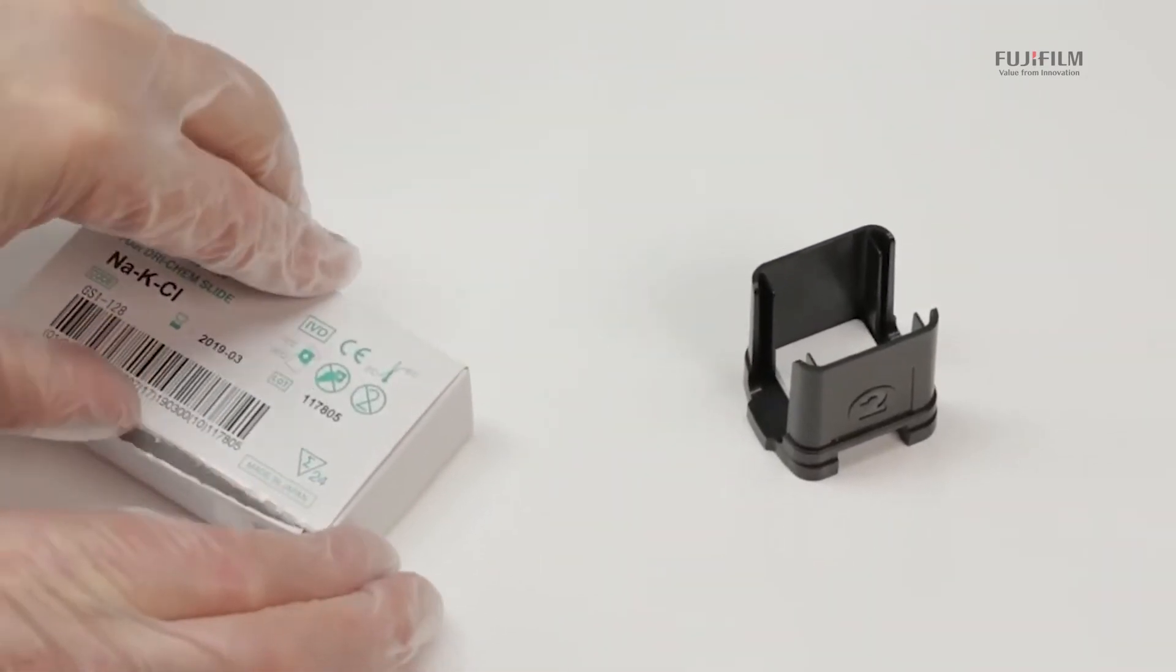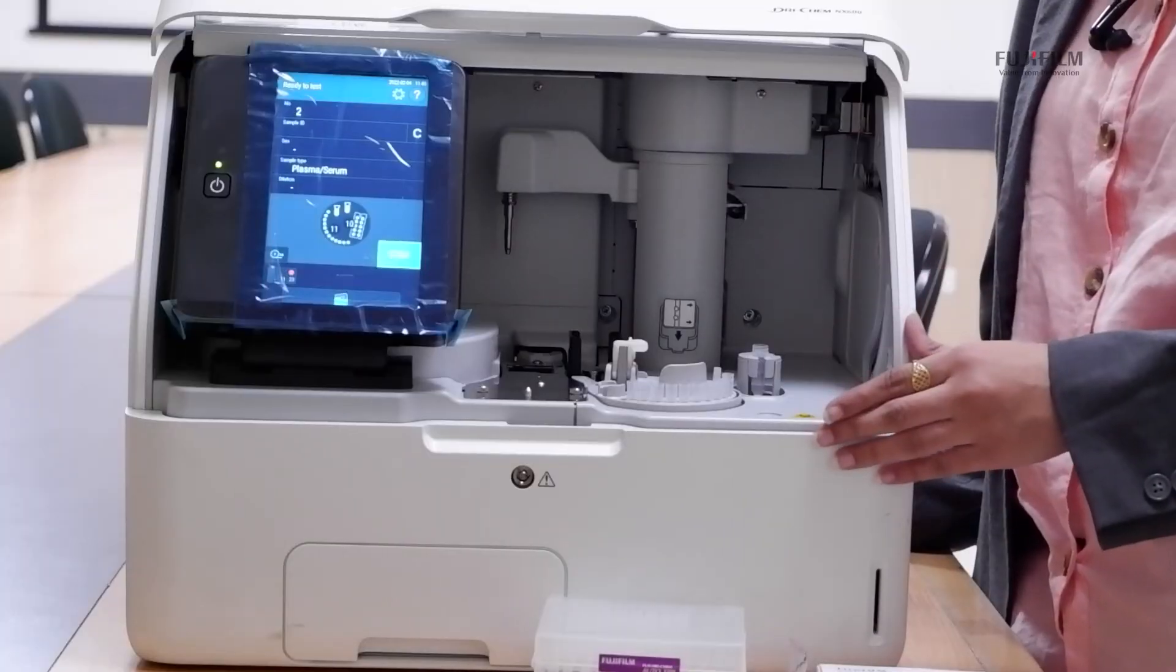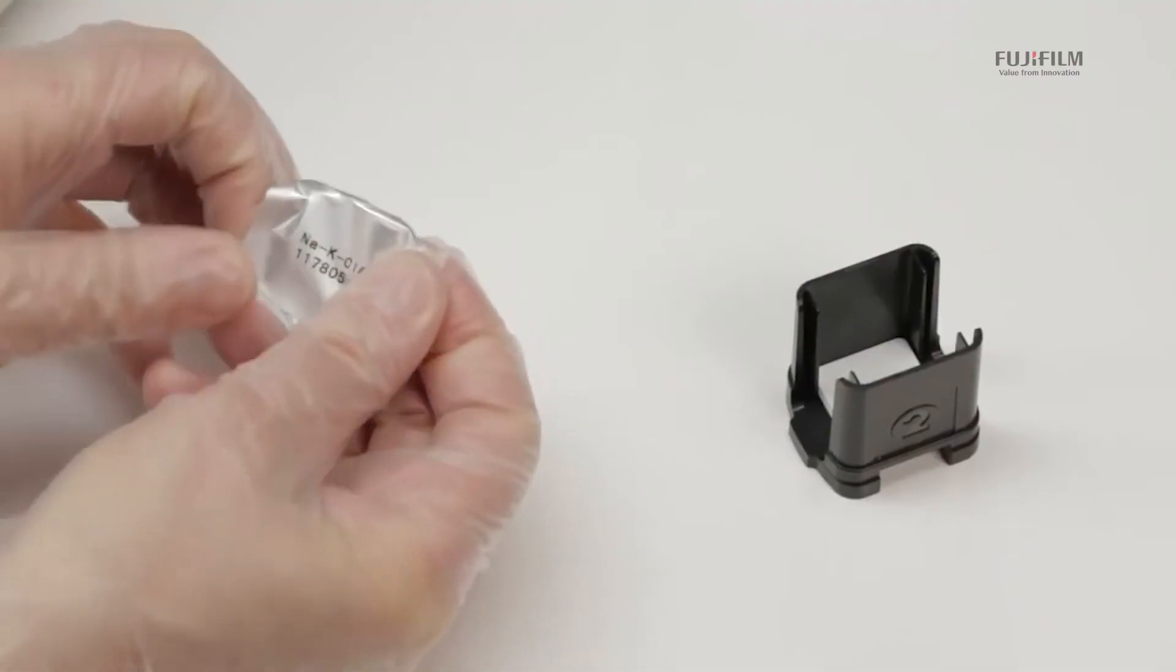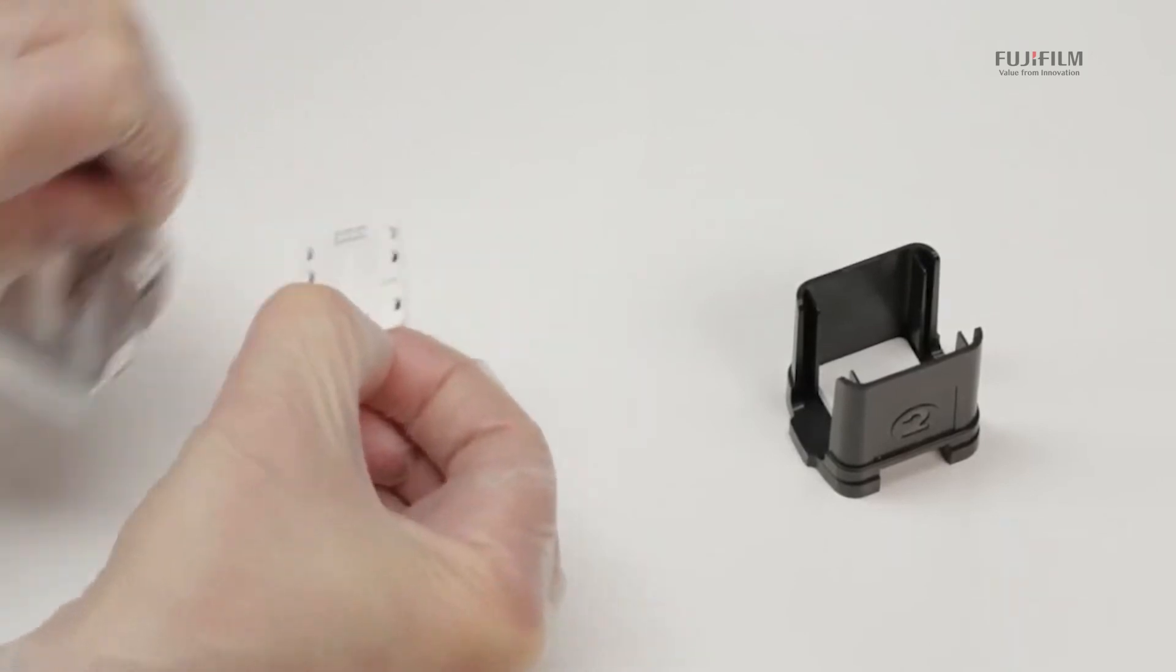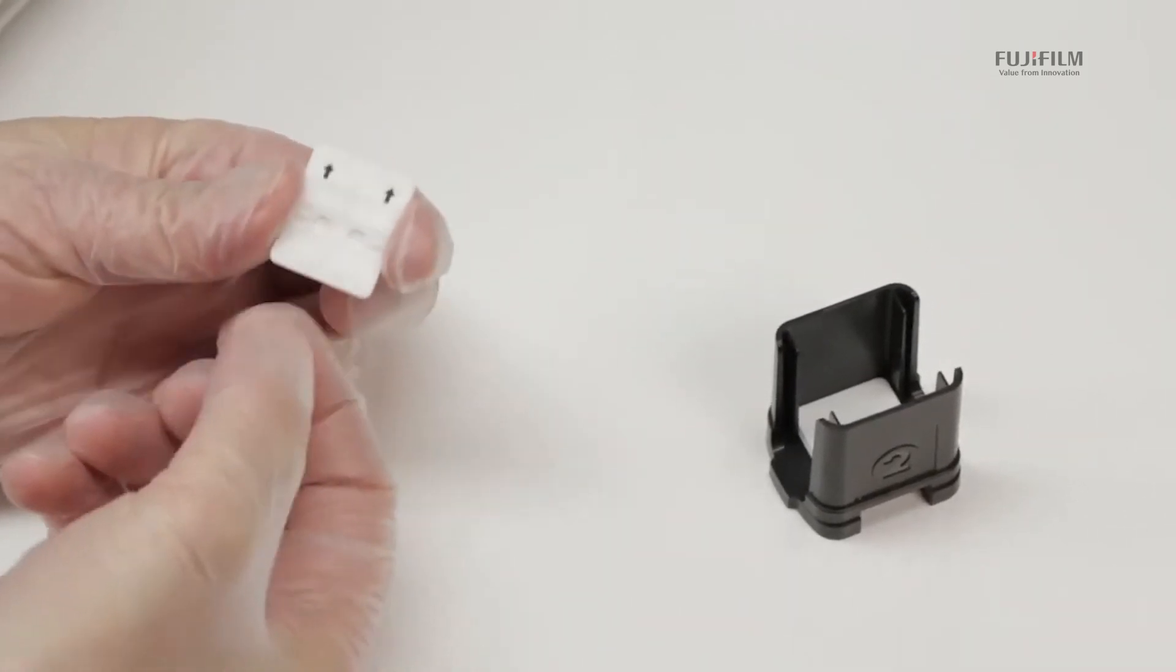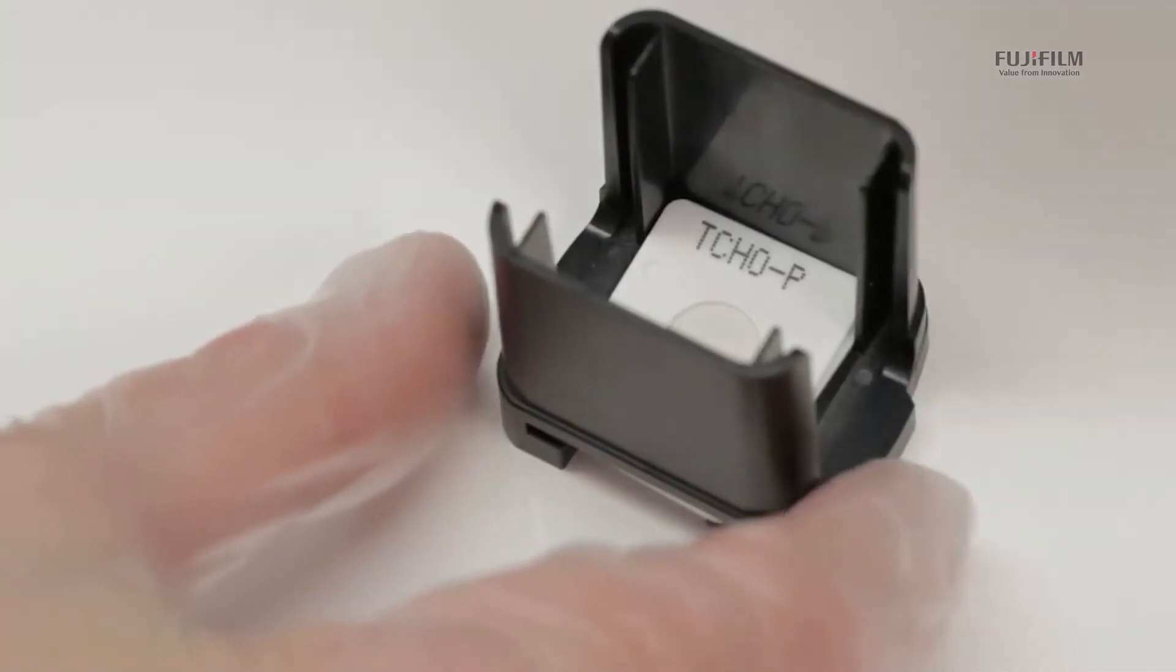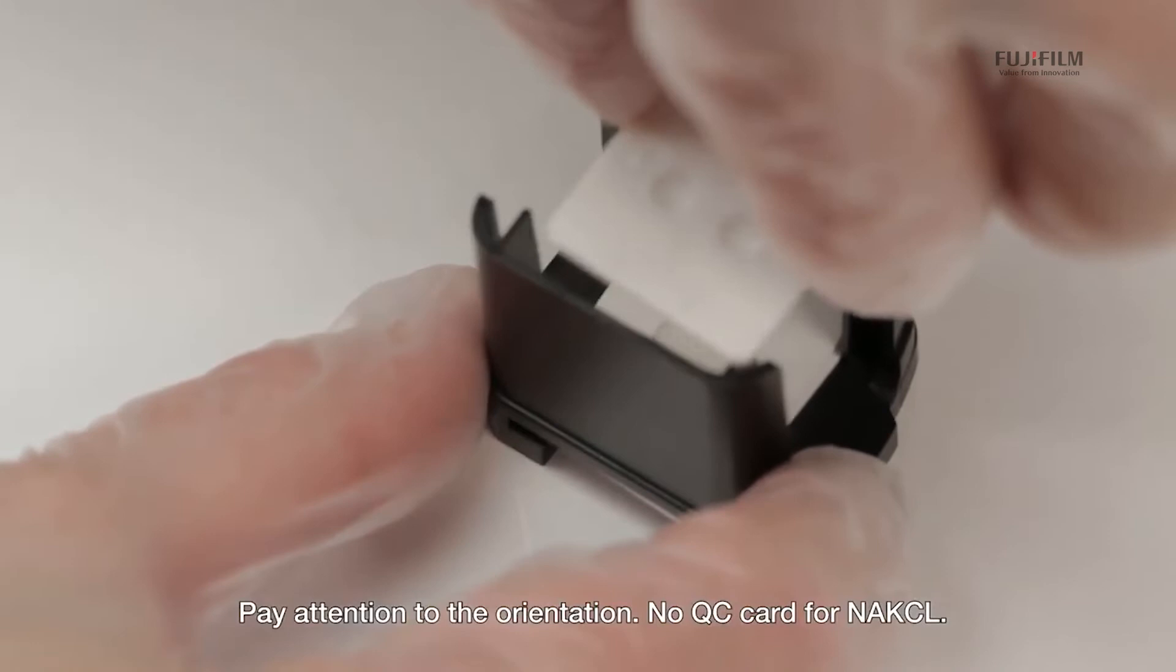NX600 also provides you with direct ISA that is sodium, potassium and chloride. All three sodium, potassium and chloride electrodes are embedded in the slides itself. So there is no worry of changing the electrodes or electrodes deteriorating or any kind of carryover occurring. 50 microlitres is what is used for each ISA sample.